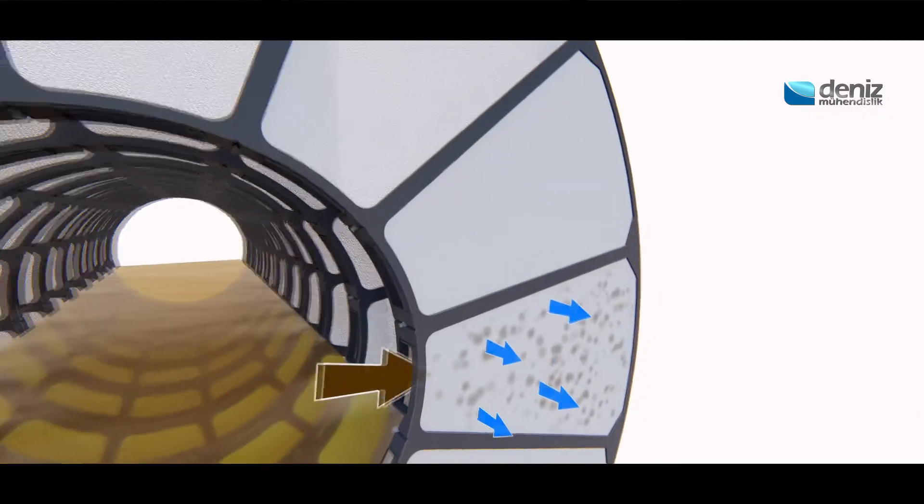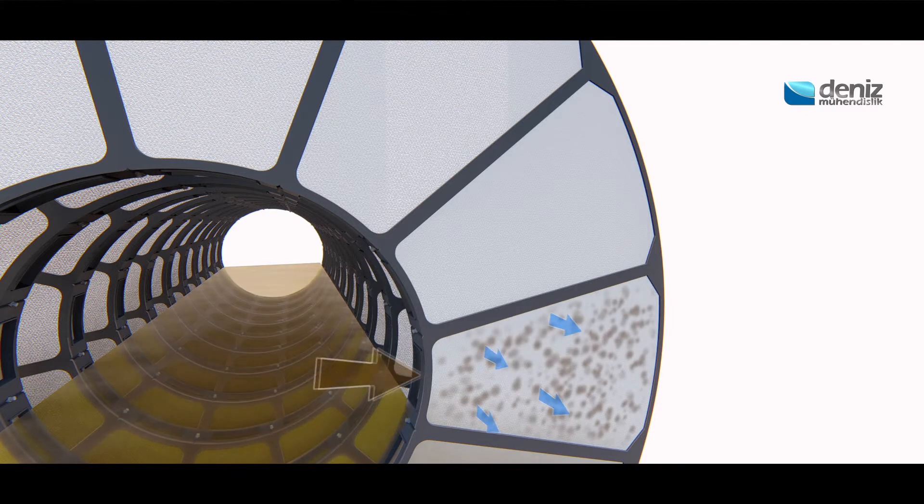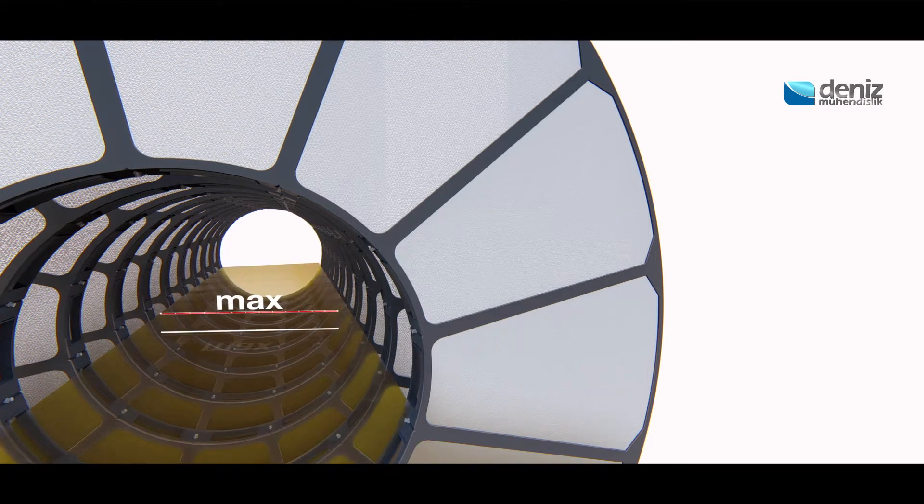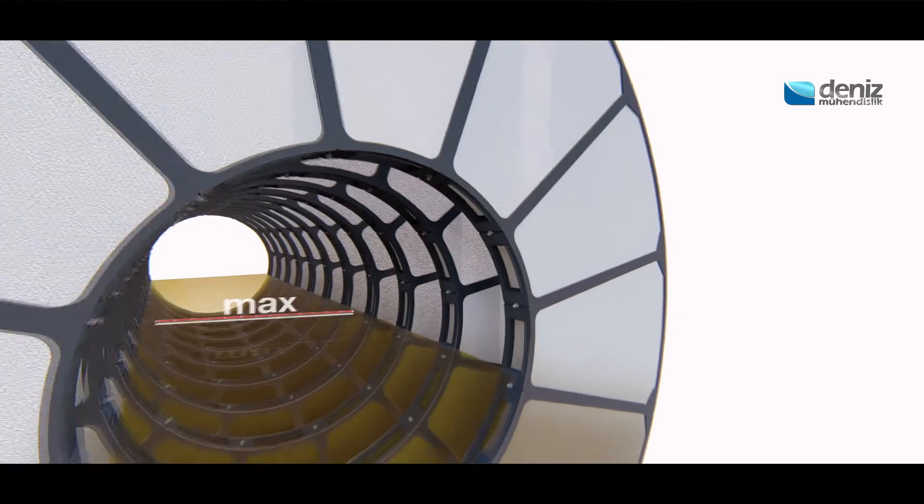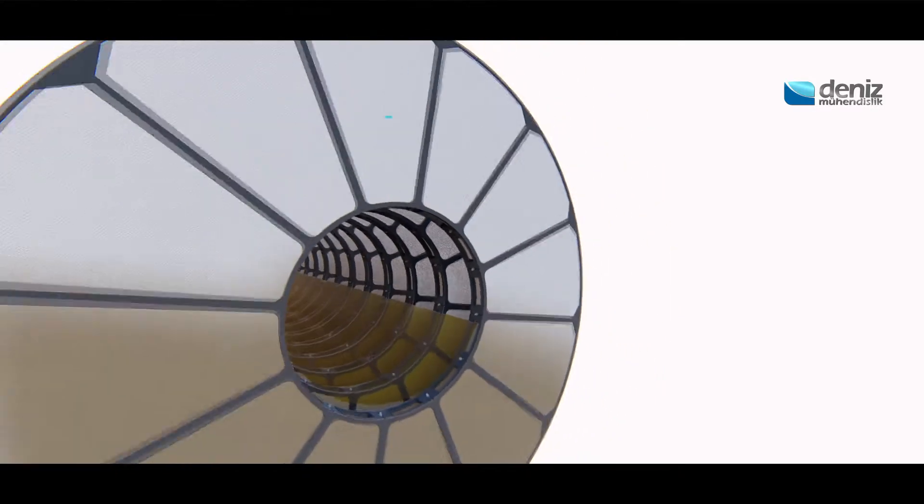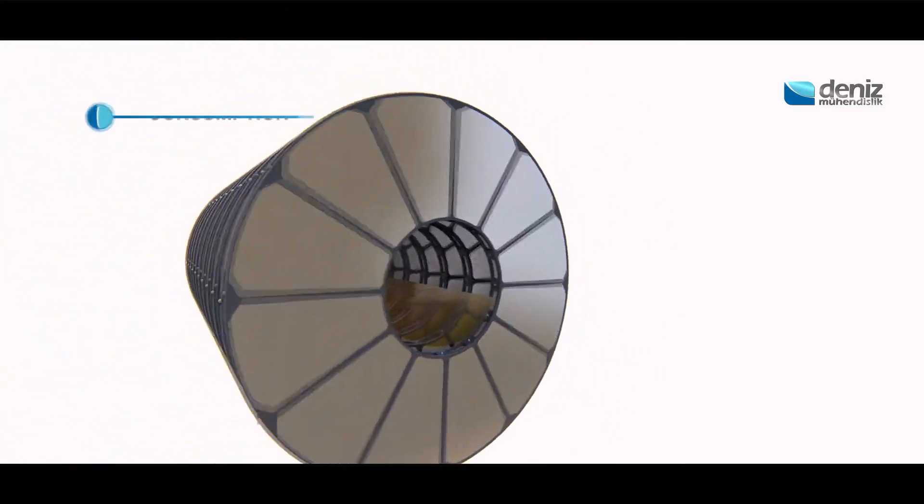As the solids accumulate on the filter cloth, water level inside the main shaft increases. When the water level reaches the preset maximum level, the backwash system engages and the discs start to rotate.